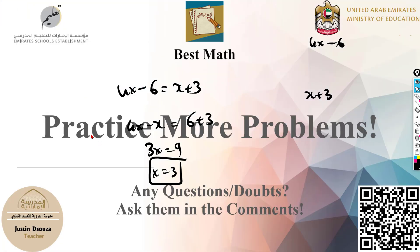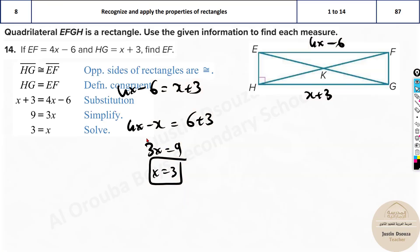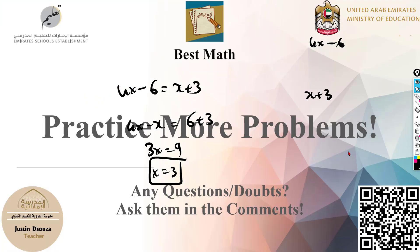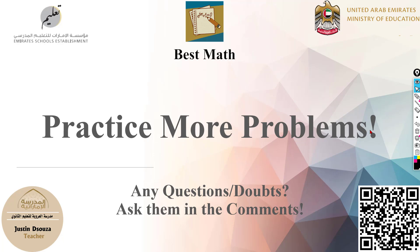X equals 3 is the answer. This is how we solve rectangle problems. To summarize: opposite sides are equal and parallel, diagonals are congruent, and all angles are 90°. Write what is given and solve from there. Please practice more problems and I'll see you in the next video — bye!